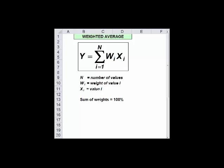w sub i is the weight of value i. Now weight can also be a probability. In either case, the sum of the weights has got to be 100% or 1. x of i is value of i. Let's look at a very common example.